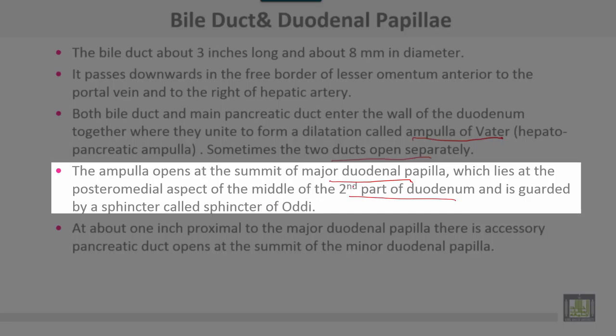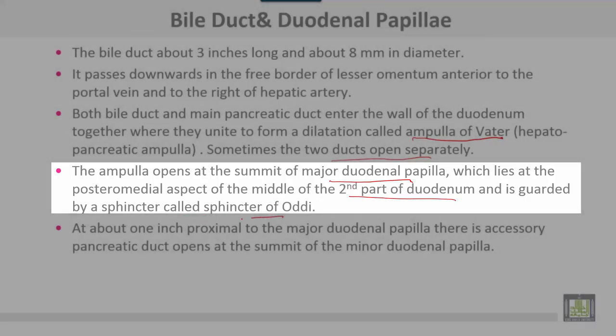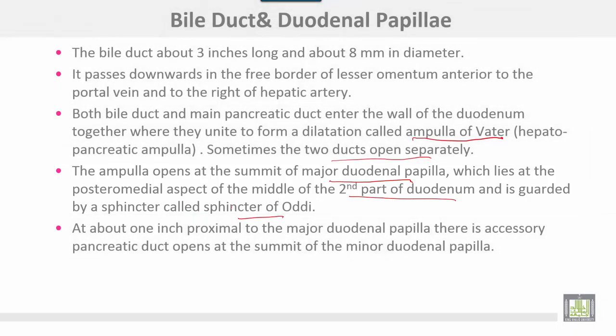The ampulla is guarded by a sphincter called the sphincter of Oddi. About one inch proximal to the major duodenal papilla, there is an accessory pancreatic duct, which opens at the summit of the minor duodenal papilla.